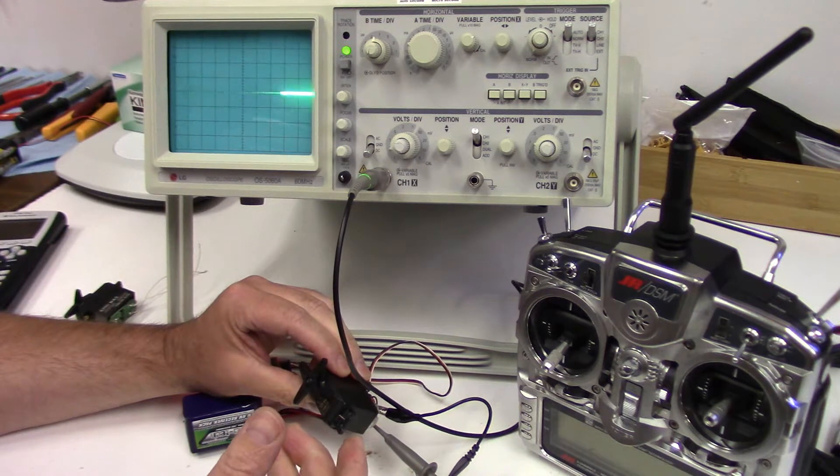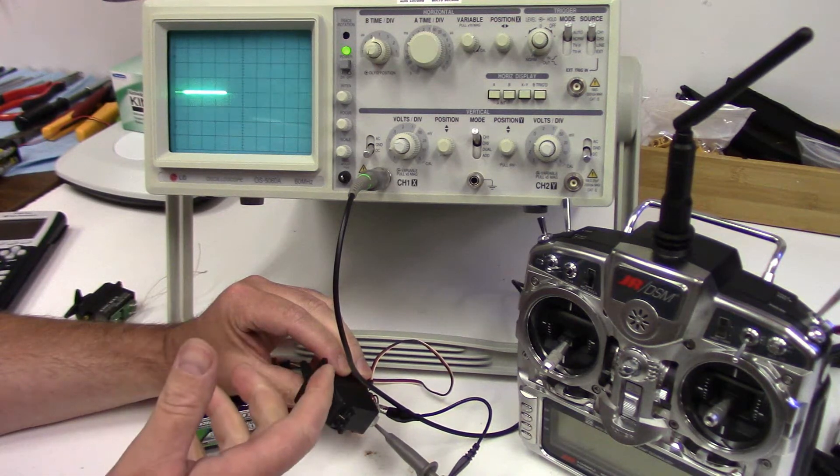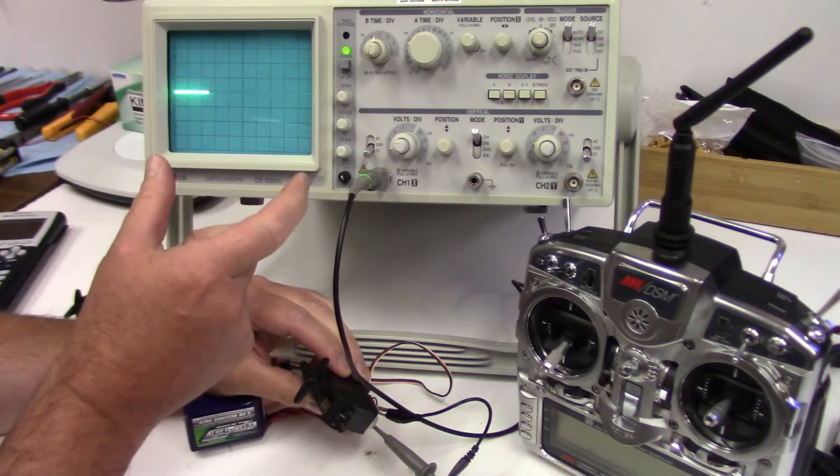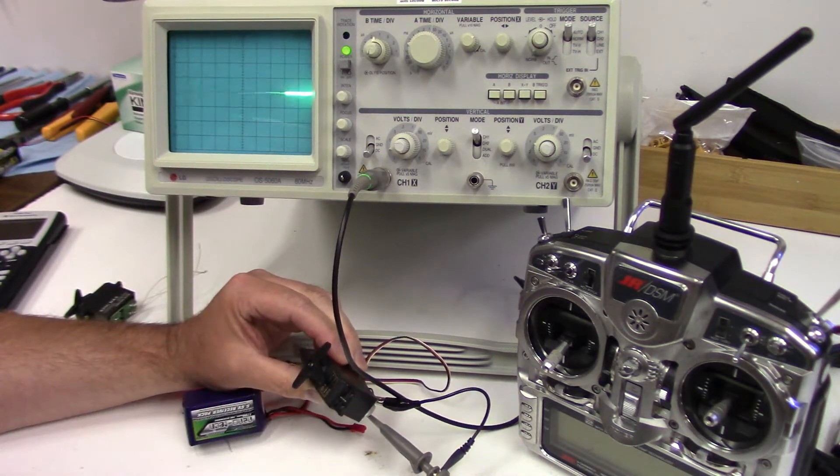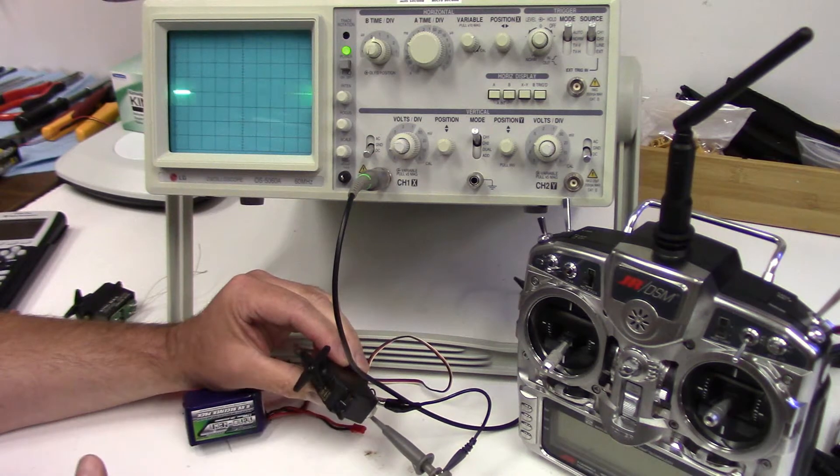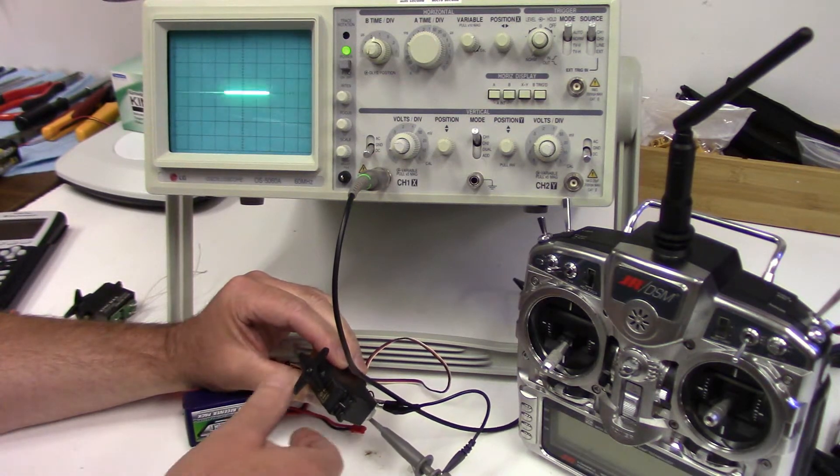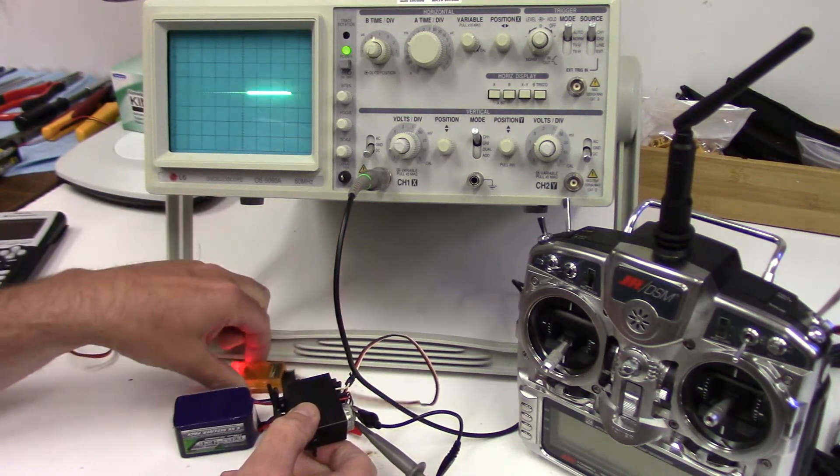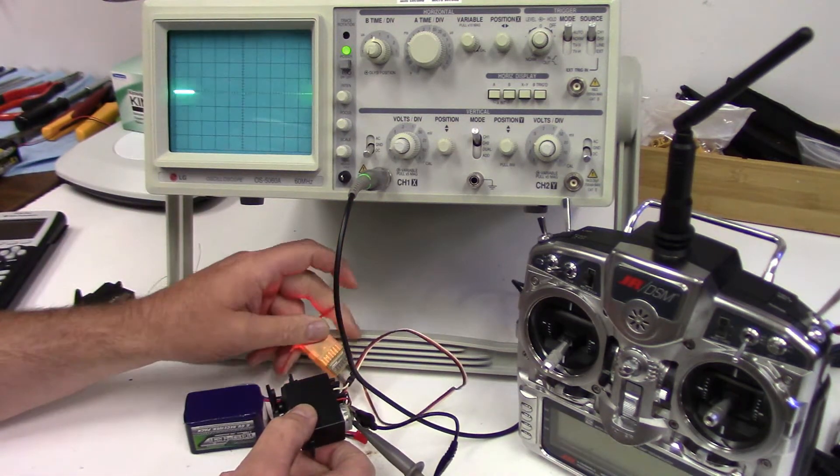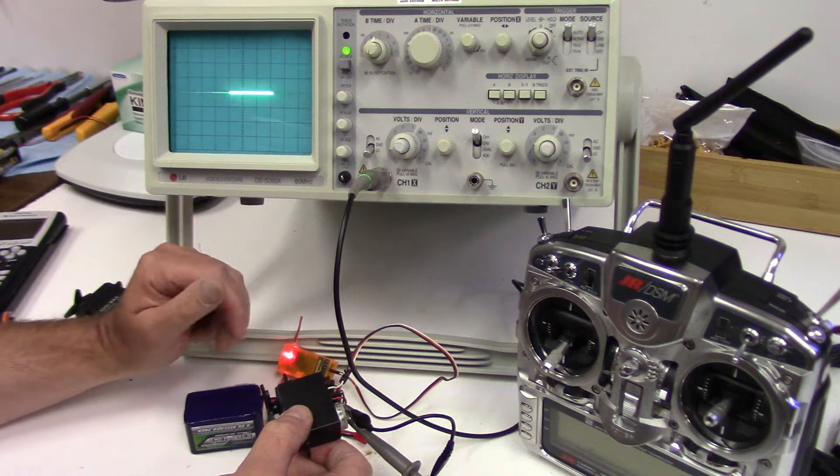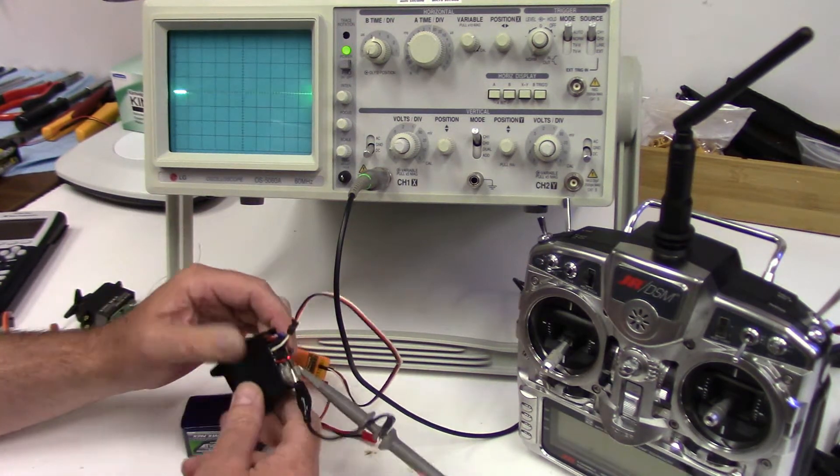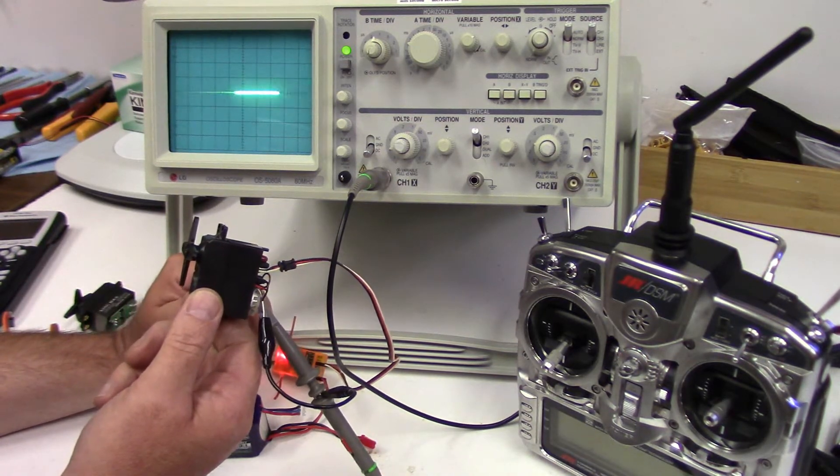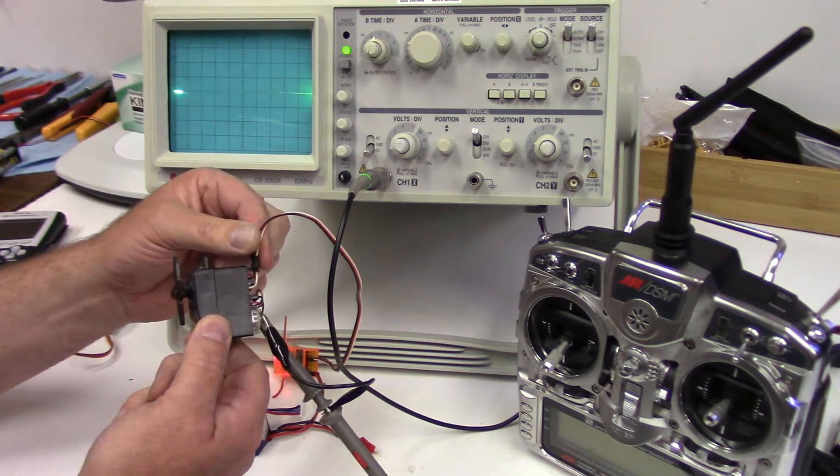The first two videos we talked about the PWM signal, pulse width modulation signal, about how the width of that signal dictates servo position and the frequency at which that signal refreshes. We talked about the normal 50 hertz frequency that you'd get out of the receiver and then the higher frequencies that you get out of today's flybarless units. This last part we're going to talk about the difference between digital and analog servos to help clarify the information on my web page under that section.